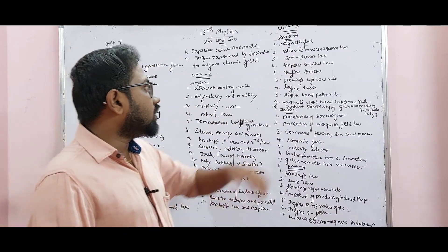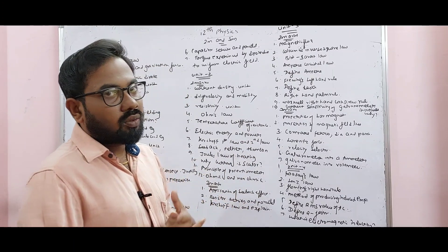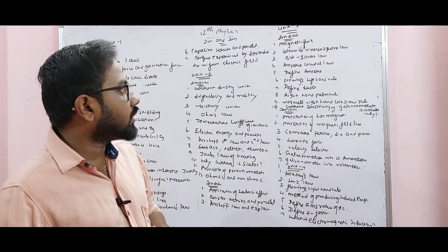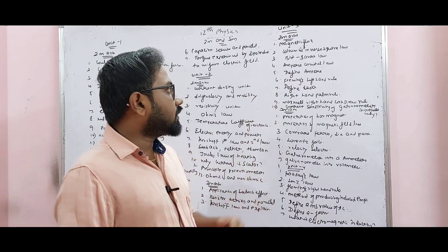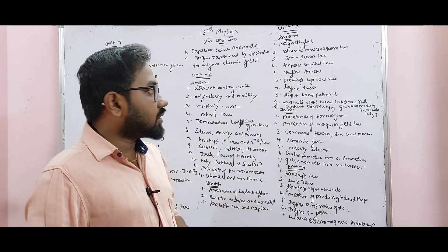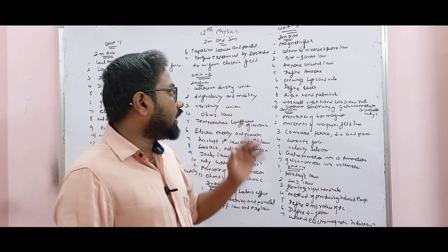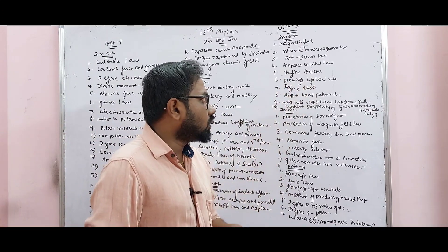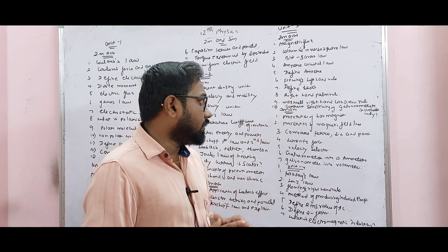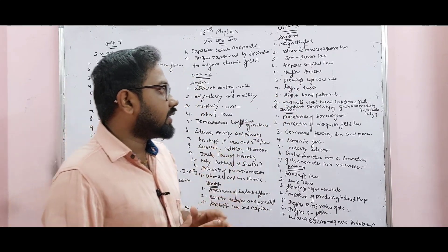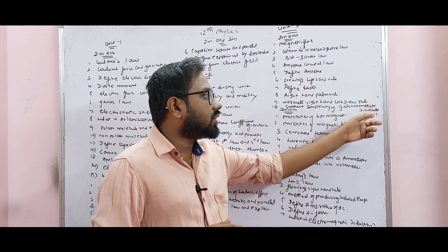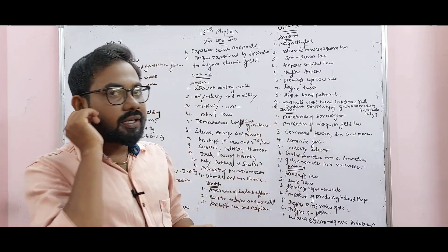Unit 3: 2 mark is very important. Magnetic flux is very important. Define Ampere, Fleming's Left-Hand Rule, define Tesla, Right-Hand Palm Rule, Maxwell's Right-Hand Corkscrew Rule. Current sensitivity increases — why? If you want to study this question, it is very easy.